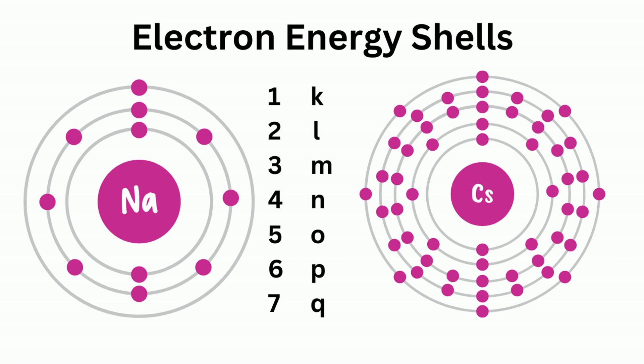The electron energy shells can be numbered or named one or two ways. They can be numbered one through seven based on their principal quantum number, or they can use alphabetical notation k through q.